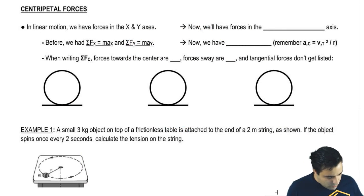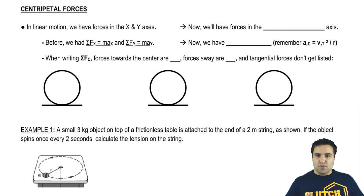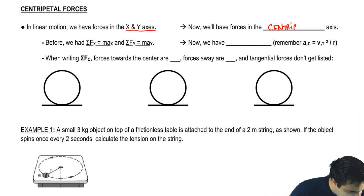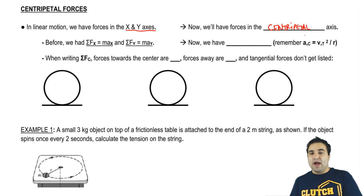So in linear motion, when you're moving in the x-axis, the y-axis, or even at an angle like this, as long as it's a straight line, we had forces in the x and y axis. Now we're going to have forces in the centripetal axis. And the idea is that the x or y axis can be thought of as a centripetal axis if rotation is happening in that direction. Let me show you real quick.